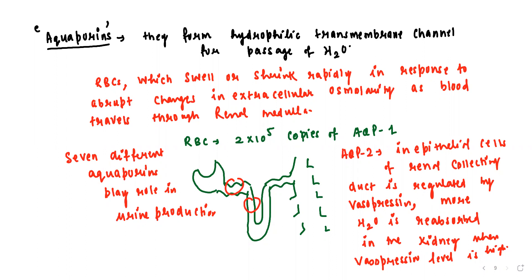Vasopressin level responds to the filtration rate, which is 180 liters per day, while urine output is 1 to 1.5 liters maximum.